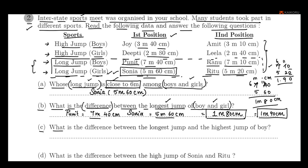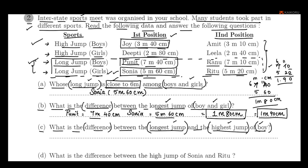What is the difference between the longest jump and highest jump of boys? The longest jump for boys is 5m 20cm and the highest jump for boys is 7m 40cm. Finding the difference: 7m 40cm minus 3m 40cm gives a difference of 4 meters.